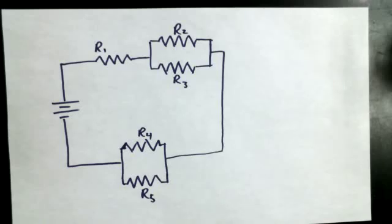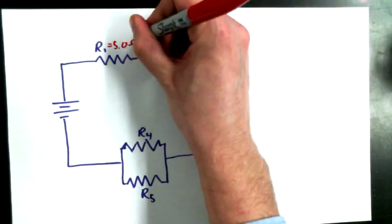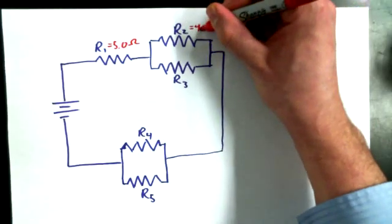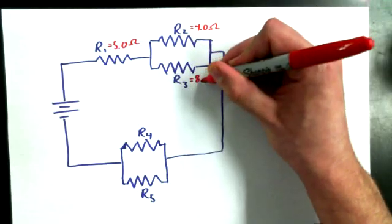I've got this circuit with five resistors in it, and resistance one we're given as 5.0 ohms, resistance two is 4.0 ohms—I'm choosing nice round numbers—R3 is 8.0 ohms.